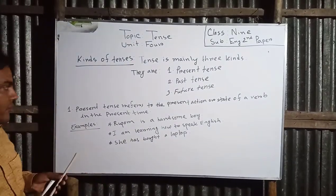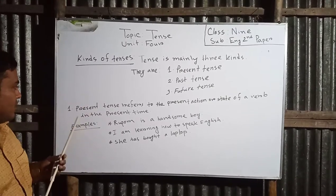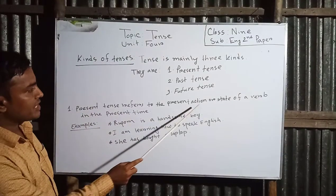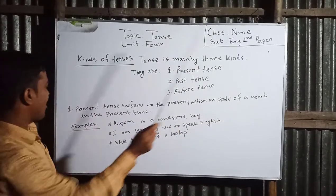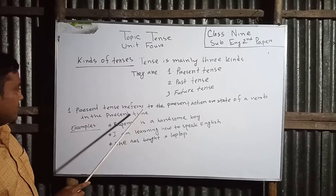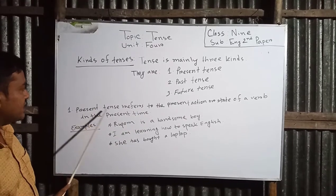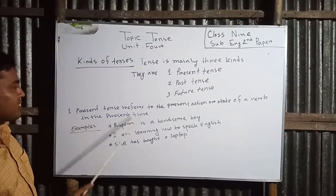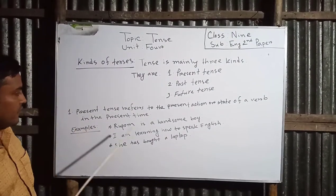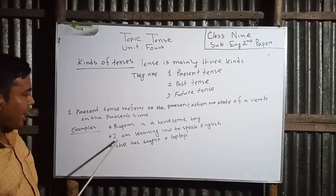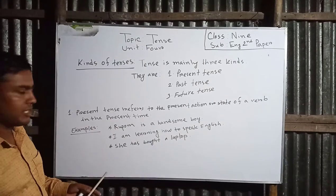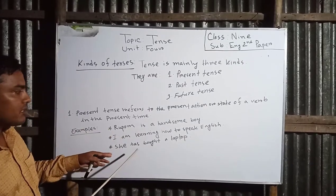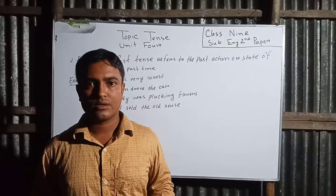Dear students, now let's see what present tense is. Present tense refers to the present action or state of a verb in the present time. Examples: Rupam is a handsome boy. I am learning how to speak English. She has bought a laptop. All three are examples of present tense.